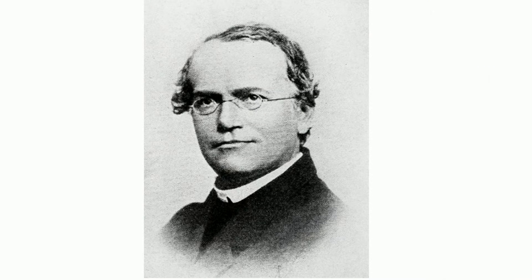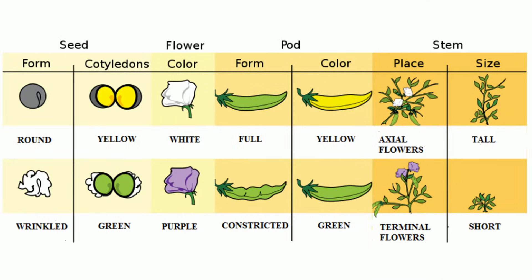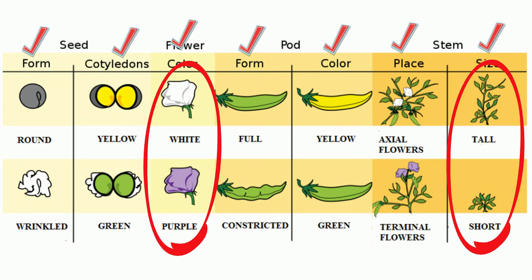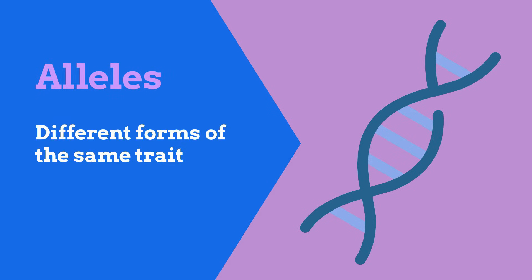Gregor Mendel, who is considered the father of genetics, studied seven traits of pea plants. Notice that for each trait there are different forms. For example, the color of the flower can be white or purple, and the pea plant can be tall or short. For all seven traits, each trait has a different form. These would be examples of alleles — different forms of the same trait.